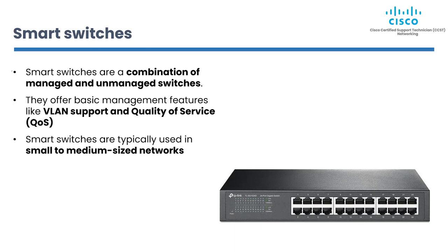The third type are smart switches, which are a combination of managed and unmanaged switches. They offer basic management features like VLAN support and quality of service (QoS), but do not offer the full range of configuration options available on managed switches. Smart switches are typically used in small to medium-sized networks where some control over network traffic is needed but advanced configuration options are not required.